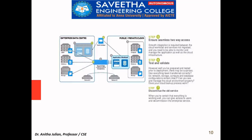The final step is to discontinue the old service. Once everything has been migrated and shifted to the cloud, there is no need to maintain connectivity with the legacy or old system, so we decommission the enterprise service. This is how we go about cloud resource provisioning. We will stop here and continue in the next lecture, where we will see a little more in detail about the types of cloud resource provisioning. Thank you.